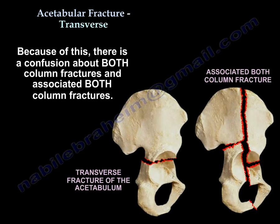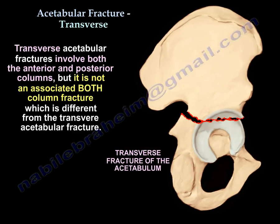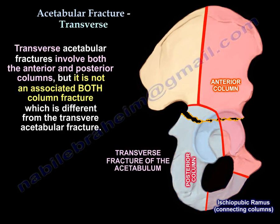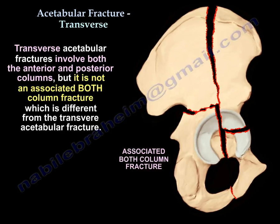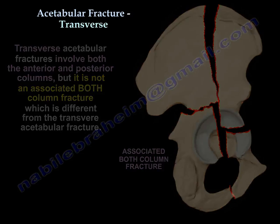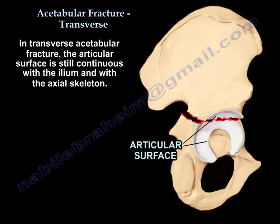Because of this, there is confusion between the transverse fracture and the associated both column fracture. The transverse fracture involves both the anterior and posterior columns, but it is not an associated both column fracture — that is a different entity. In a transverse fracture, the articular surface is still continuous with the ilium and with the axial skeleton.